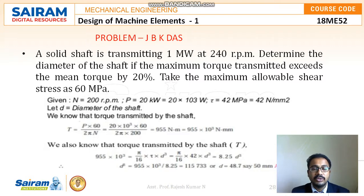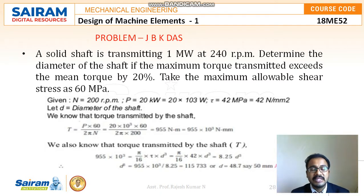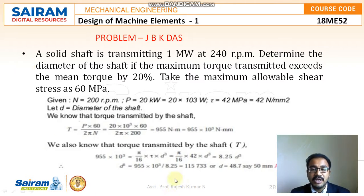The torque transmitted by the shaft T = 955 × 10³ N·mm, which equals (π/16) × τ × D³. Since τ is known and torque is known, solving for D gives a calculated diameter of 48.7 mm. From the design data handbook, Chapter 14, the standard diameter value is taken as 50 mm.